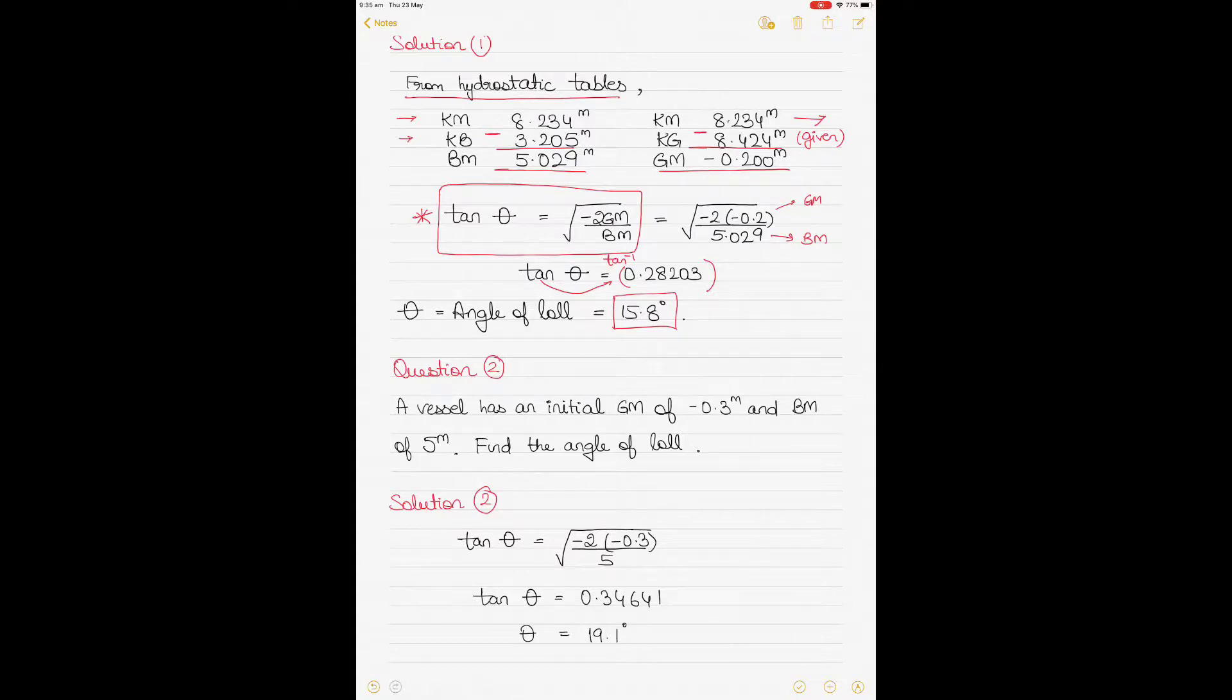If you are solving the under root, solve the internal value first and then find out the square root in the calculator. So solve the numerator, then divide the denominator, and then find the under root of the value in the calculator, which should lead to this value here.